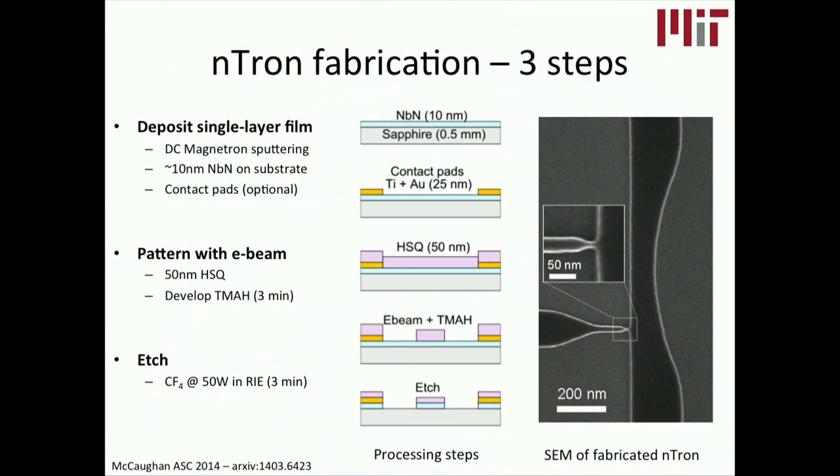I want to really emphasize here how the n-tron fabrication is done because it's very, very simple. At the end of the day, it's really just three steps. You put a thin film down. It doesn't really matter how thick as long as it's less than a diffusion length thick.